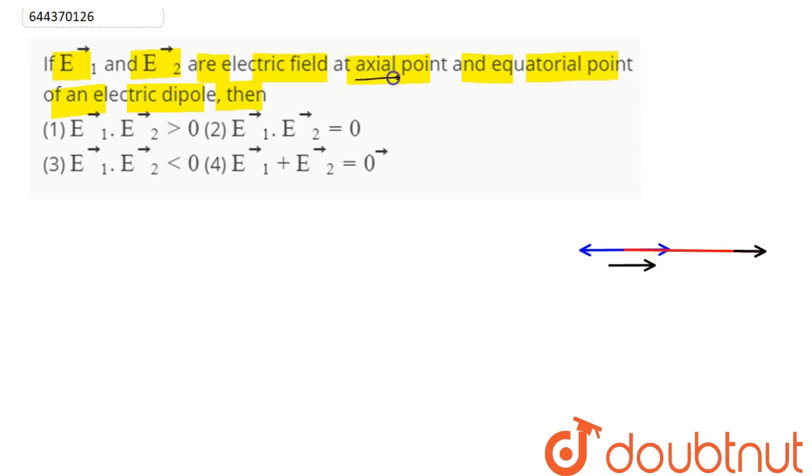At axial point electric field is E vector. Electric field has two components at any point: radial component and tangential component. Radial component is 2kp cos theta divided by r cube, and tangential component is kp sin theta divided by r cube.